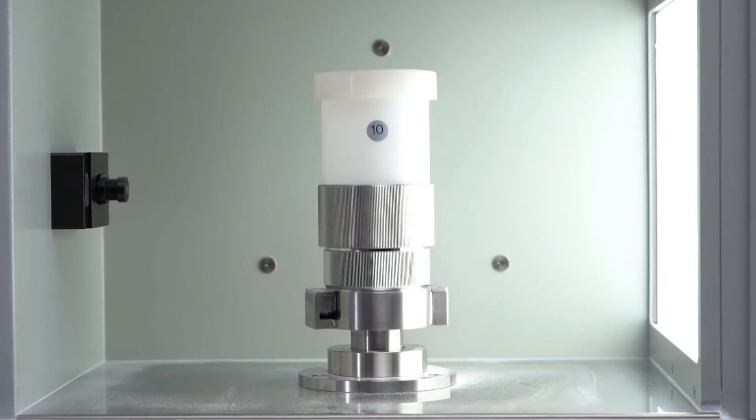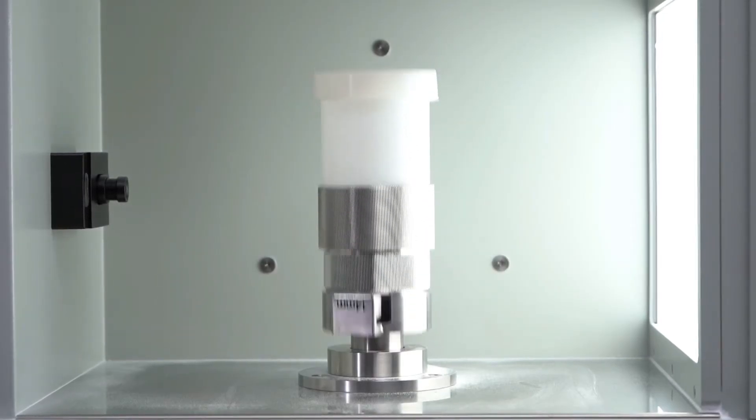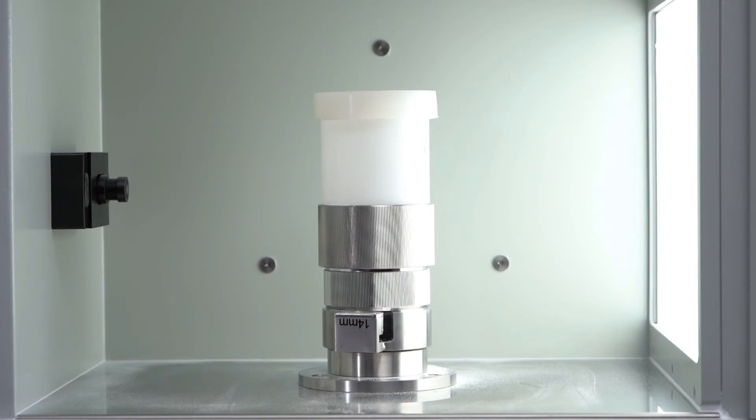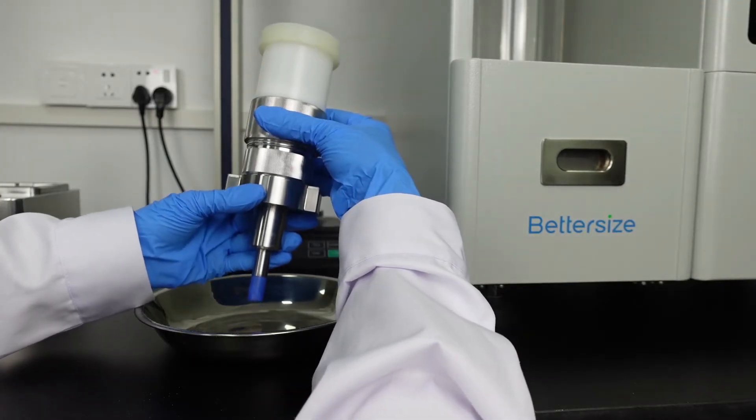Click Start Vibrate to start vibrating and stop vibrating when the preset vibration times reach. Take out the tap density assembly.